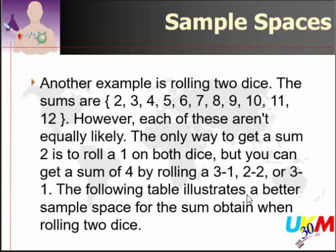Another example is when you have a die — dadu. If you go to a casino like Genting Highlands or Marina Bay Sands, there's a table called the craps table — C-R-A-P-S. You throw two dice to the end of the table, they bounce back, and you have to guess the total sum of the two dice. It could be 1+1 giving you 2, 1+2 giving you 3, and so on, up to 6+6 giving you 12.